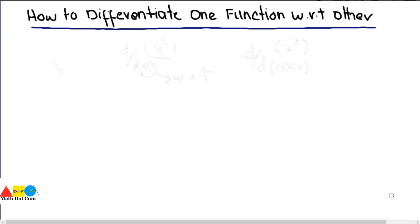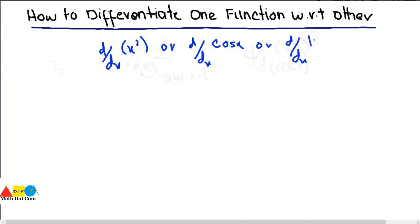Up till now we have seen functions like d/dx of x², d/dx of cos(x), or d/dx of natural log of x. In all these functions the common thing is dx — you used to differentiate these functions with respect to x. But what if you differentiate a function like x² with respect to cos(x)? Then how would you do that?